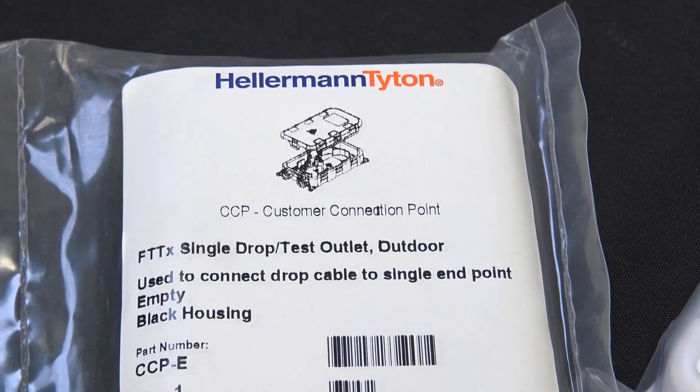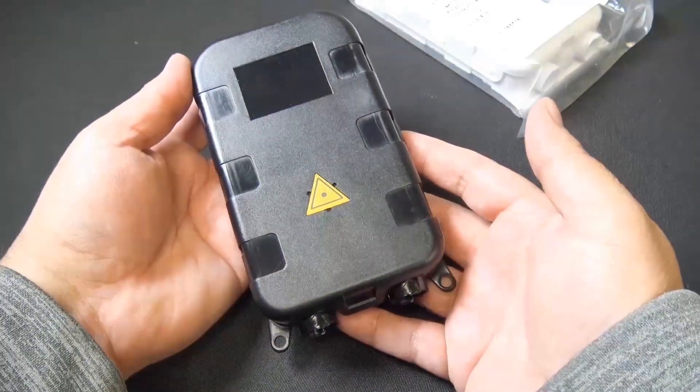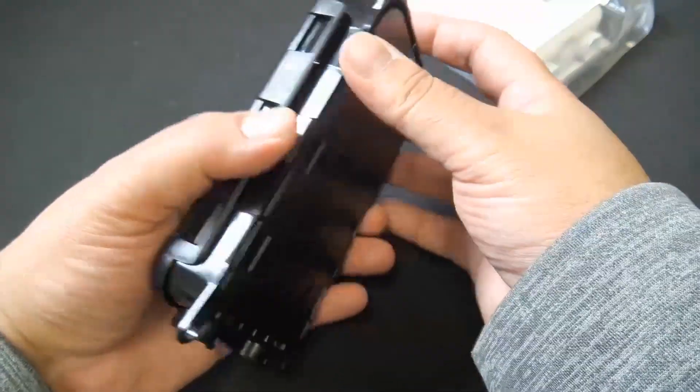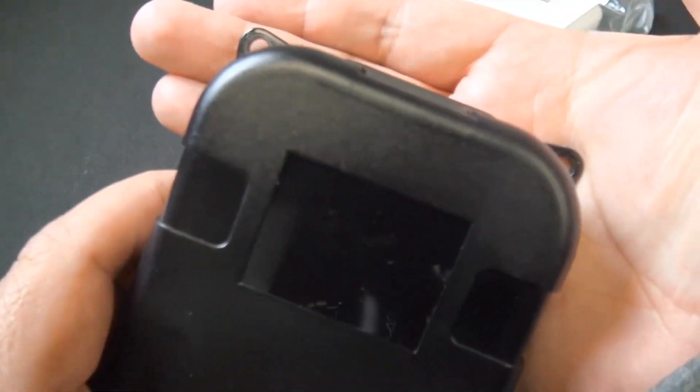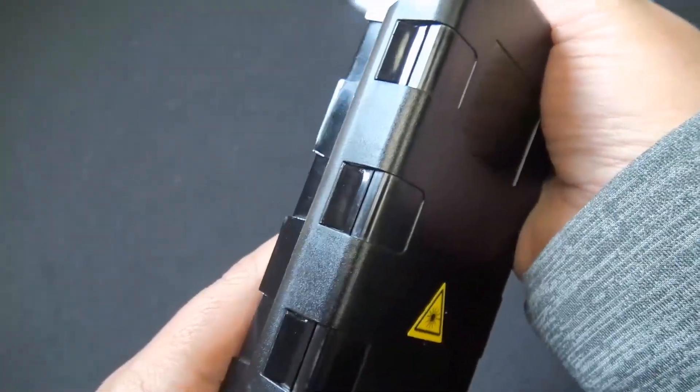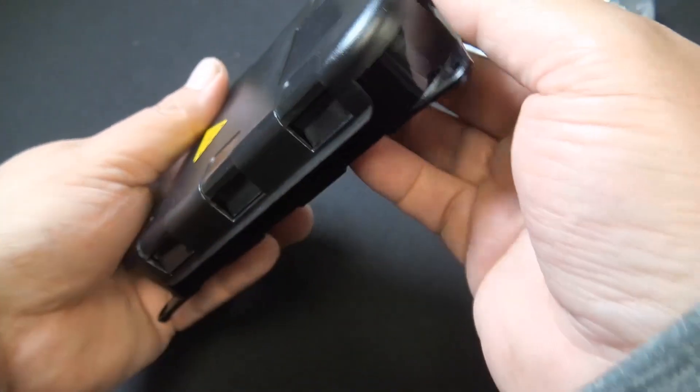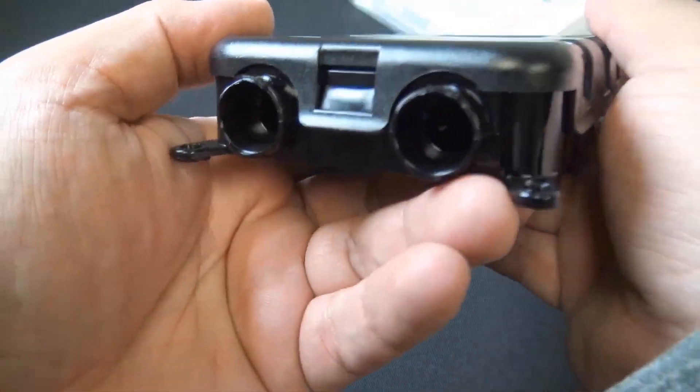Okay, today we're looking at Hellerman Titan part number CCP-E and there it is. It's fully water sealed achieving an IP68 NEMA 6P rating for use in wall or handhold installations. That's pretty nice. Separate inbound outbound access points ensure cable sealing and segregation. There it is right there.